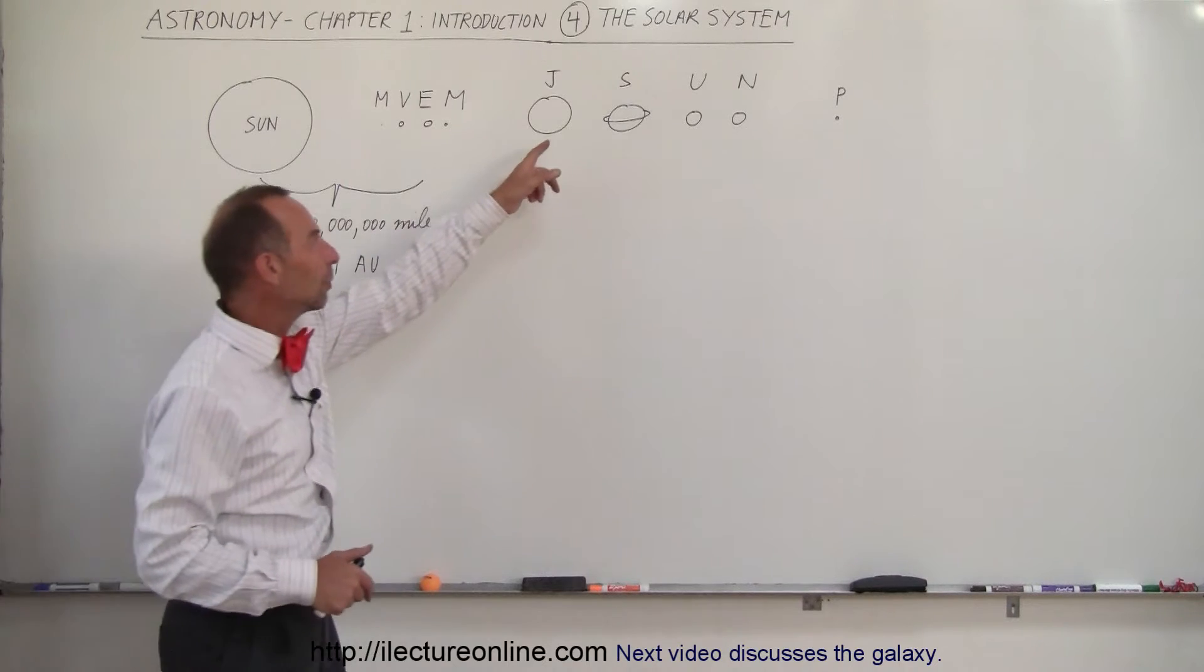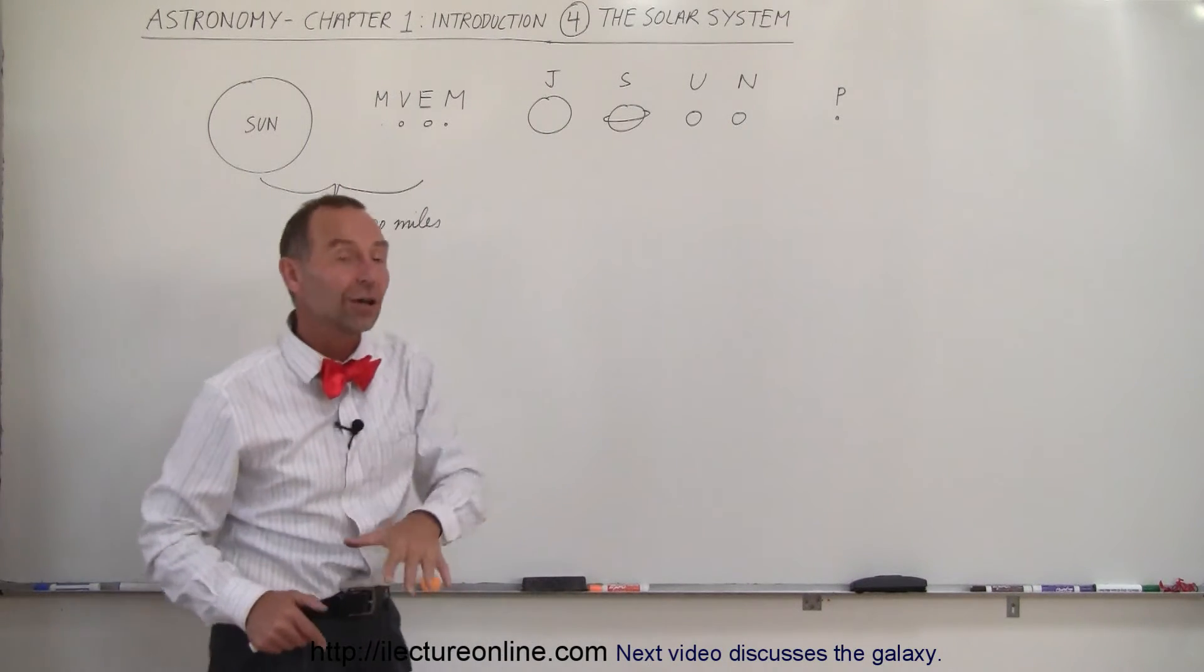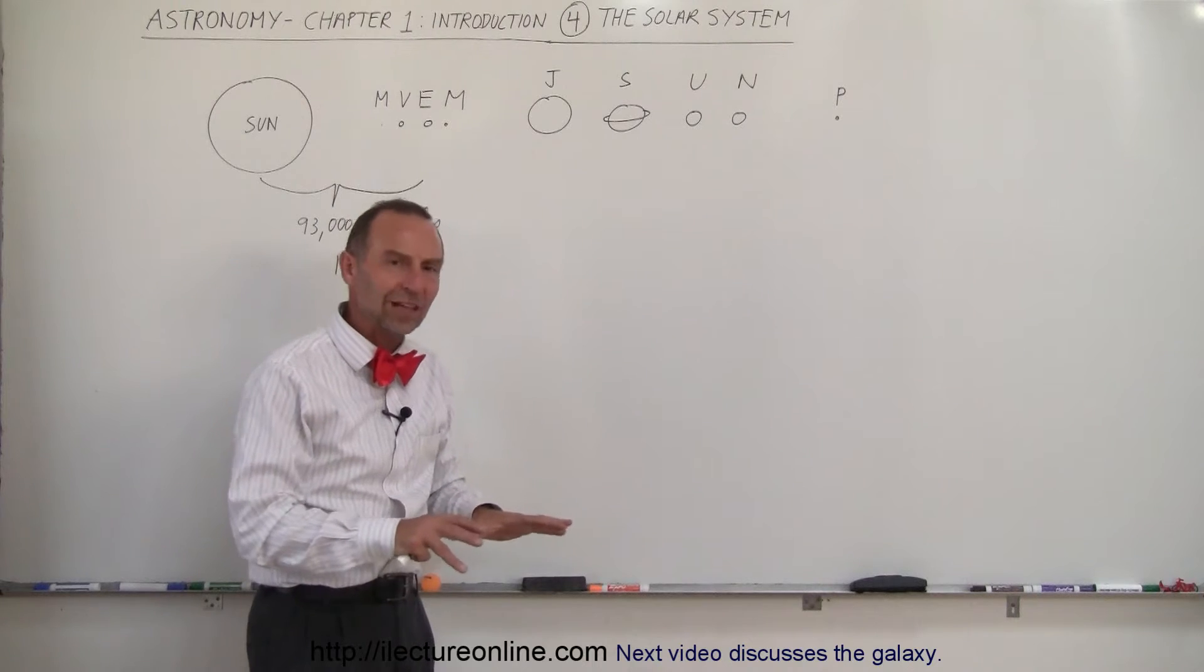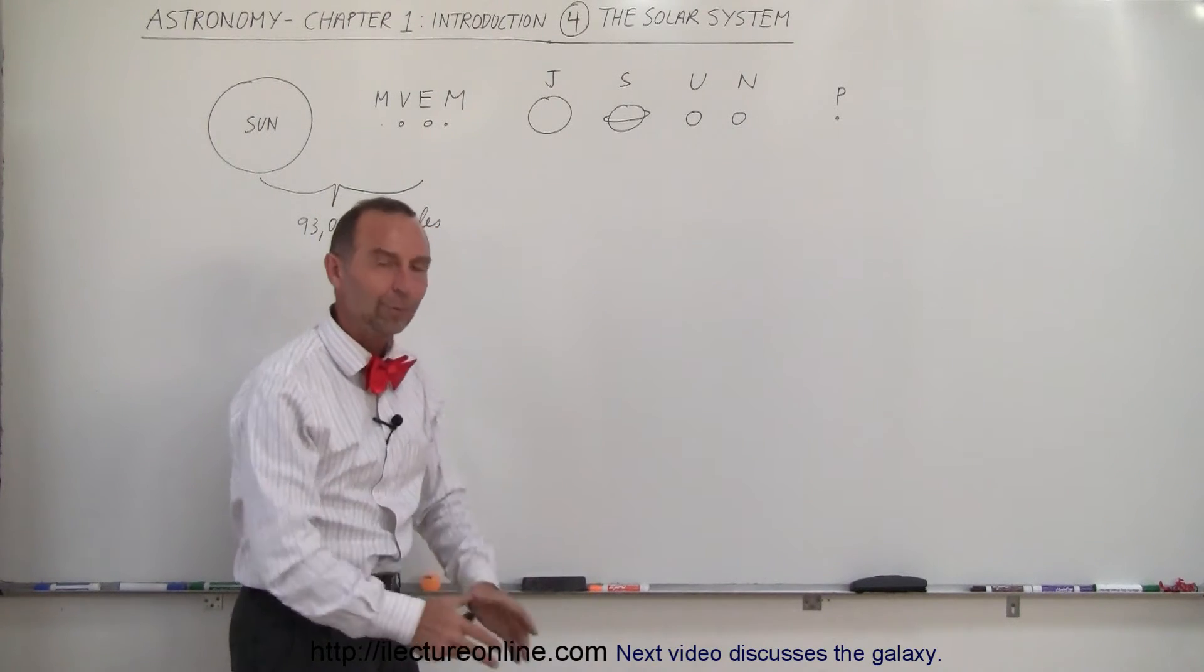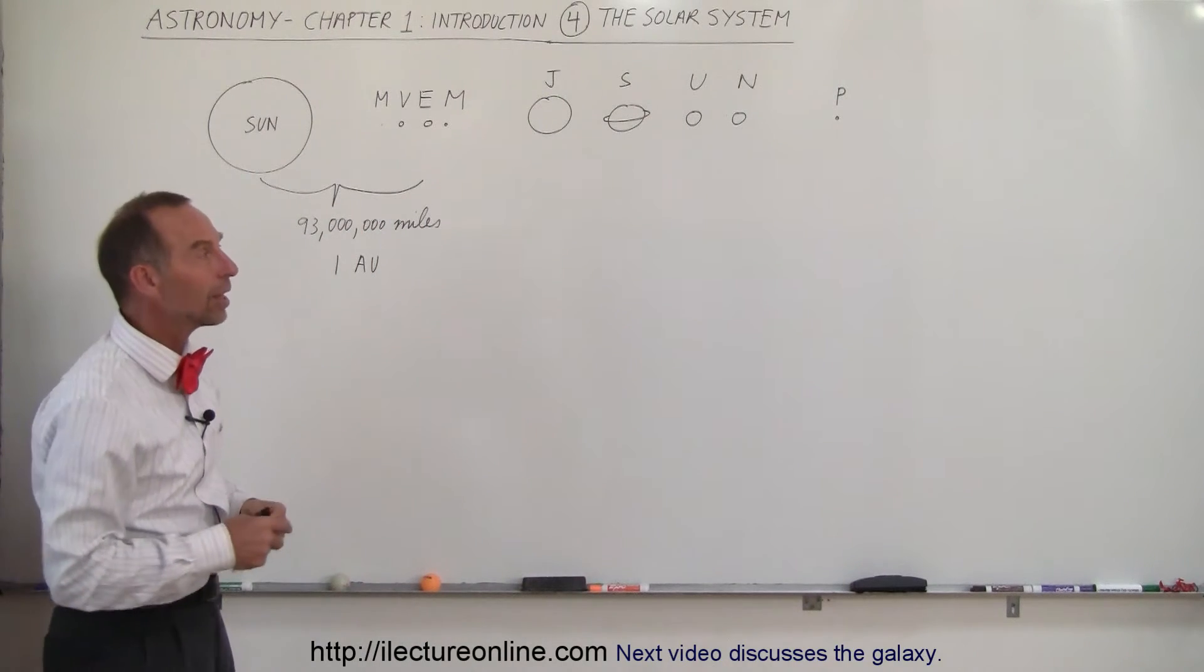And then we have the big gas planets: Jupiter, Saturn, Uranus, and Neptune. Don't try to walk on those, because walking on those is like trying to walk on a cloud. You will fall right through the surface and will be engulfed inside a planet, just like it would be falling through a cloud.